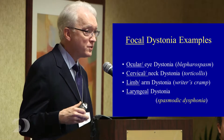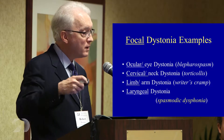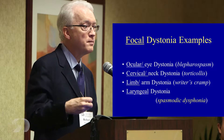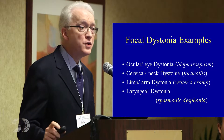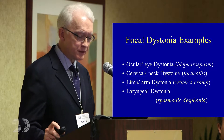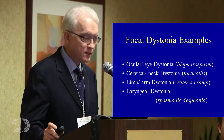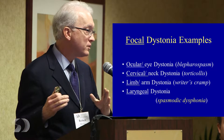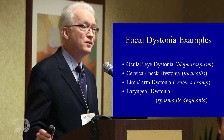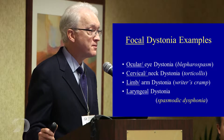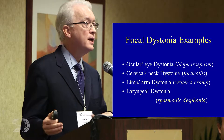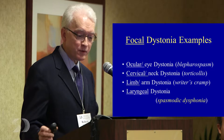Writer's cramp is a limb dystonia where the dominant arm might be affected by involuntary spasms that interfere with writing or other activities. And then we get to laryngeal dystonia. We typically use the terms laryngeal dystonia and spasmodic dysphonia interchangeably, because about 95% of people with laryngeal dystonia manifest as spasmodic dysphonia, and the remaining manifest as a respiratory dystonia.